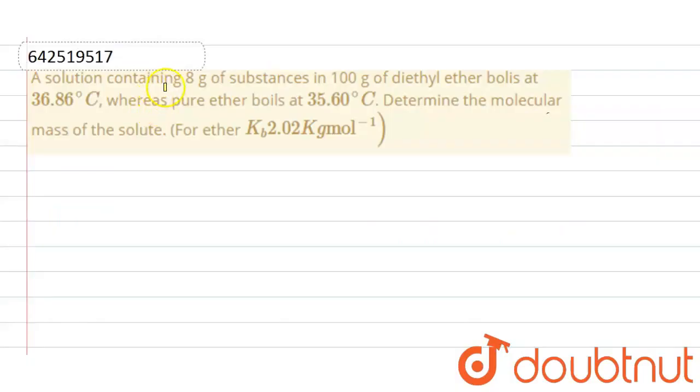Hello everyone. Here the question is: A solution containing 8 grams of substance in 100 grams of diethyl ether boils at 36.86 degrees Celsius, whereas pure ether boils at 35.60 degrees Celsius. Determine the molecular mass of the solute.